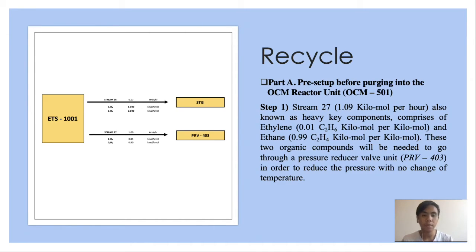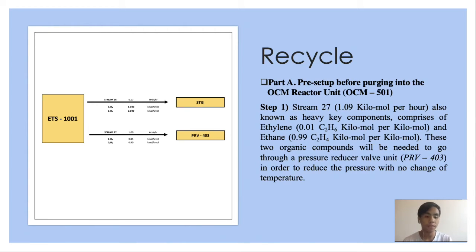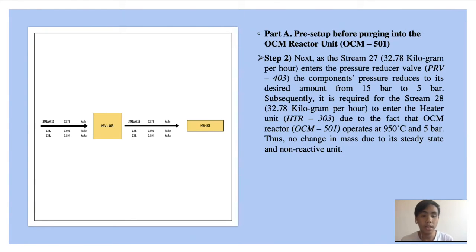I am going to discuss the recycling part for the OCM production from shale gas. For Part A, Stream 27, also known as the heavy key components, comprises ethylene and ethane. These two organic compounds go through a pressure reducer valve unit to reduce pressure with no change in temperature. As Stream 27 enters the pressure reducer valve, the component's pressure reduces from 15 bar to 5 bar. Subsequently, Stream 28 is required to enter the heater unit because the OCM reactor operates at 950 degrees Celsius and 5 bar. There is no change in mass due to its steady state and non-reactive unit.